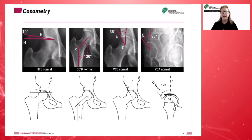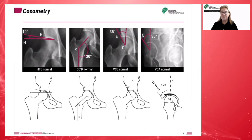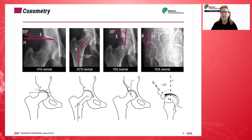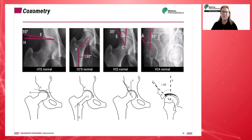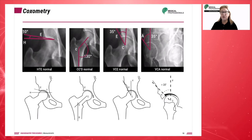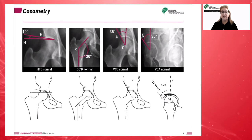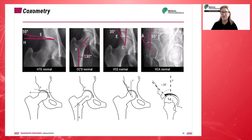An angle of less than 20 degrees is considered an indication of coxa profunda. If the value is between 20 degrees and 25 degrees, the patient is presenting with borderline acetabular dysplasia.